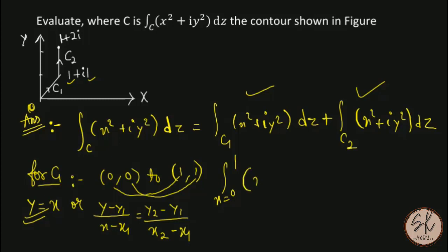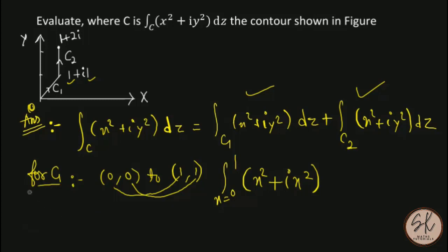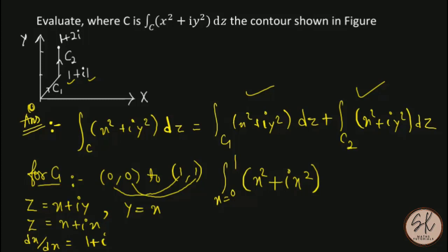Now the integrand is x² + iy². Since y = x, this becomes x² + i·x² = x²(1 + i). Also, z = x + iy = x + ix, so dz/dx = 1 + i, meaning dz = (1 + i) dx.